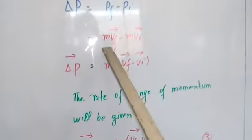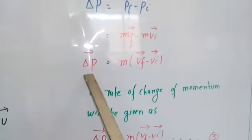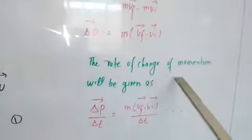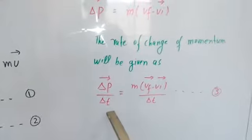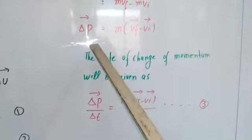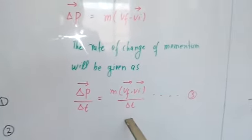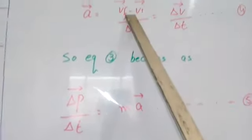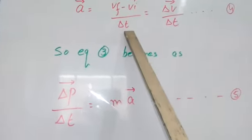यहां से मैंने M common लिया: V_f minus V_i is equal to delta P. Students हमें पता है कि rate of change of momentum के लिए किसी भी चीज़ को time पर divide करते हैं। तो मैंने इस equation को दोनों sides time पर divide कर दिया। Acceleration जो होता है वह velocity में तब्दीली को कहते हैं with respect to time — final velocity minus initial velocity divide by time — उसको acceleration कहते हैं।